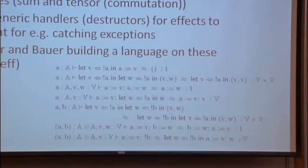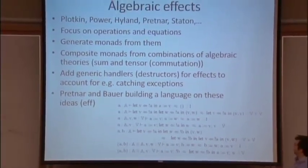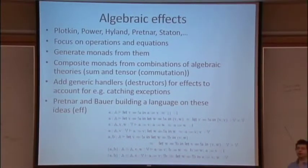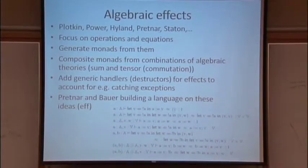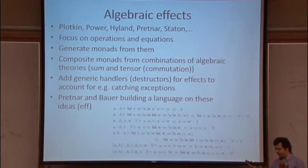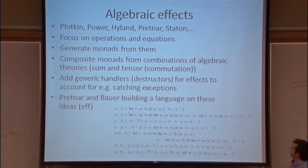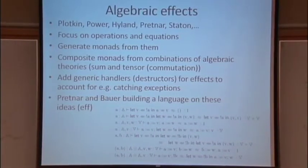One reason this is a nice approach is that the age-old problem of combining monads and monad transformers has a new solution: combining algebraic theories is straightforward — if you have one set of operators and equations and another set, you can union them and generate the monad from that combination, giving you the sum of algebraic effects. Alternatively, you can take two theories and add equations saying all operations from one commute with all operations from the other, giving you the tensor of monads. The combined monads you build this way correspond to various known ways of building monads from other perspectives.